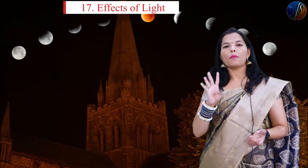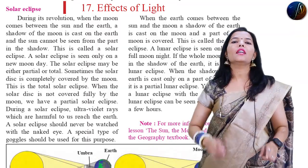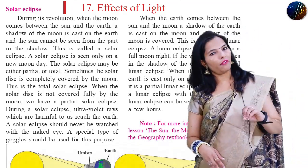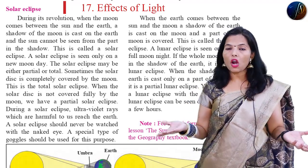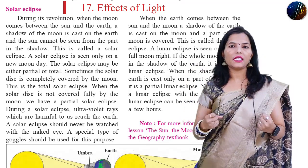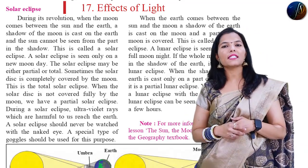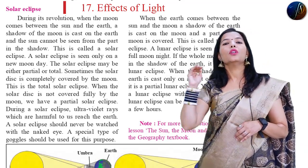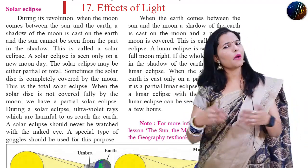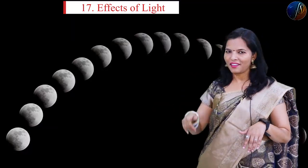The fourth point is that we cannot see the Solar Eclipse with the naked eye. We have to use a special type of goggles. We cannot see the Solar Eclipse with naked eyes because the harmful ultraviolet rays directly affect our eyes and our skin, and it causes different types of diseases. It is very harmful. That is why we cannot see the Solar Eclipse with naked eyes.